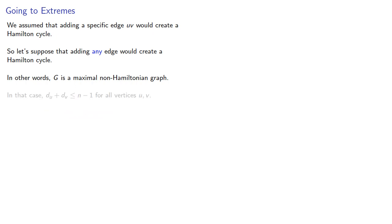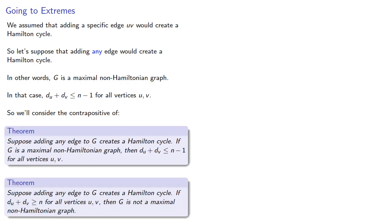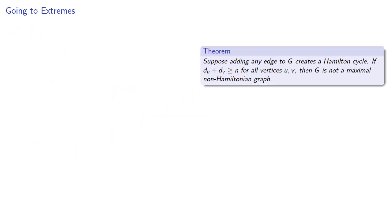In that case, our degree sum is less than or equal to n minus 1 for all vertices u and v. So we'll consider the contrapositive of... which will be... again, the contrapositive is automatically true and does not require a separate proof.